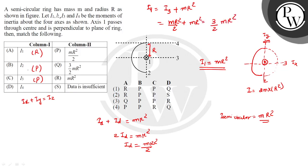This matches Q. So the final matching is R, P, P, Q — option 1 is the correct answer. I hope you all understand. Thank you so much.